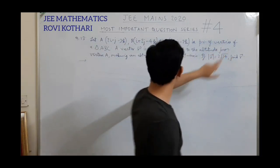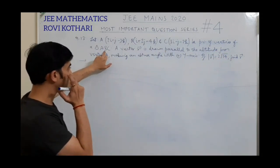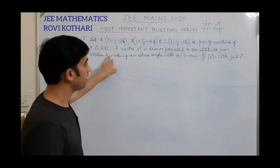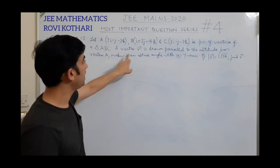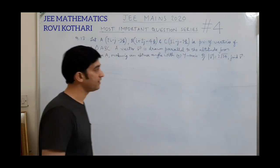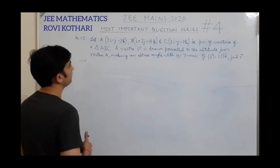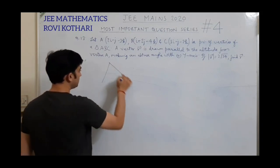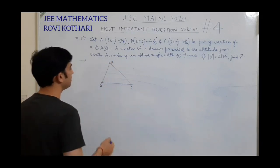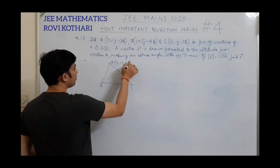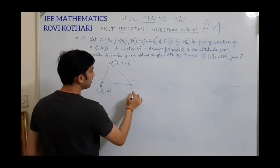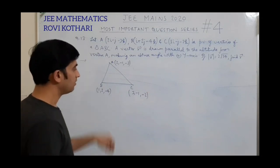Question 13: The position vectors of vertices of a triangle ABC are given. A vector R is drawn parallel to the altitude from vertex A, making an obtuse angle with the positive y-axis. If the magnitude of R is 2√34, find the vector R. Let us first draw triangle ABC. Let this be A at (2, −1, −3), B at (1, 2, −4), and C at (3, −1, −2). So I know all three vertices of the triangle.